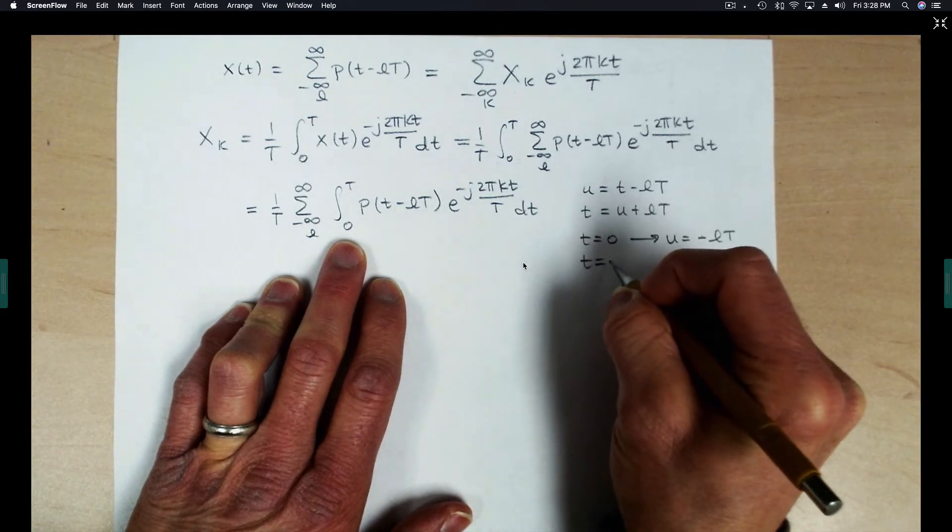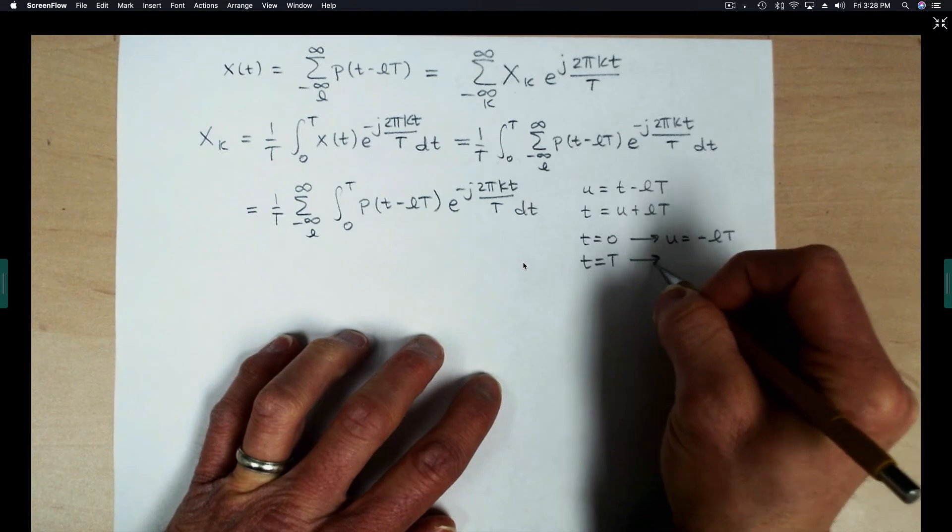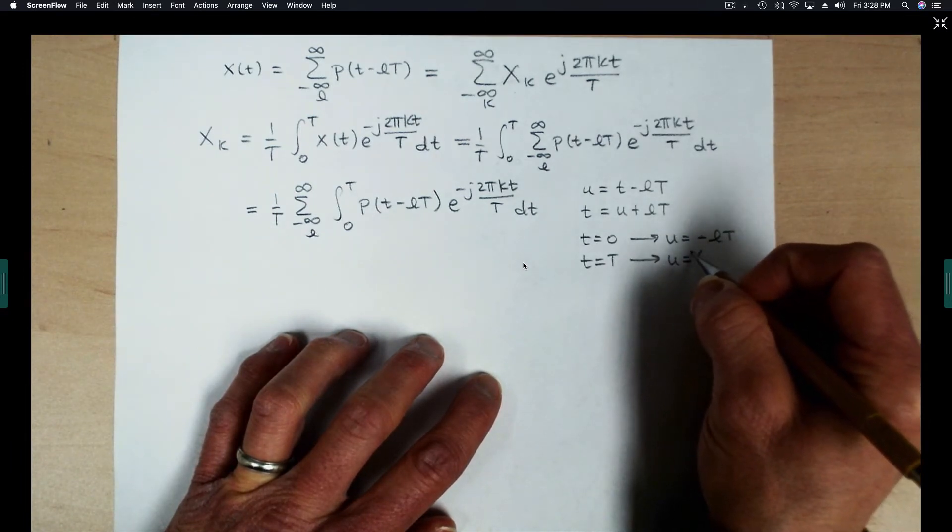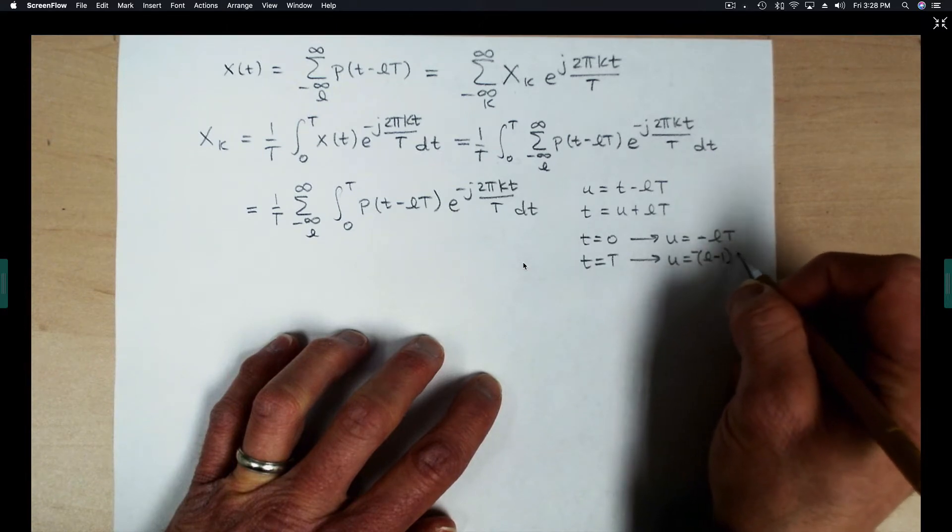And when T is equal to capital T, the upper limit, U will be equal to minus L minus 1T.